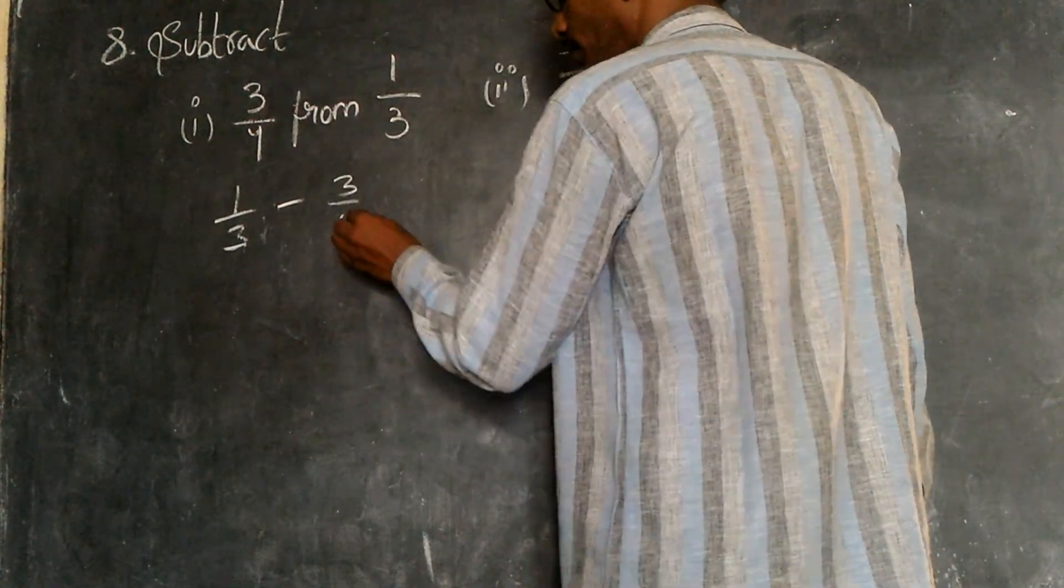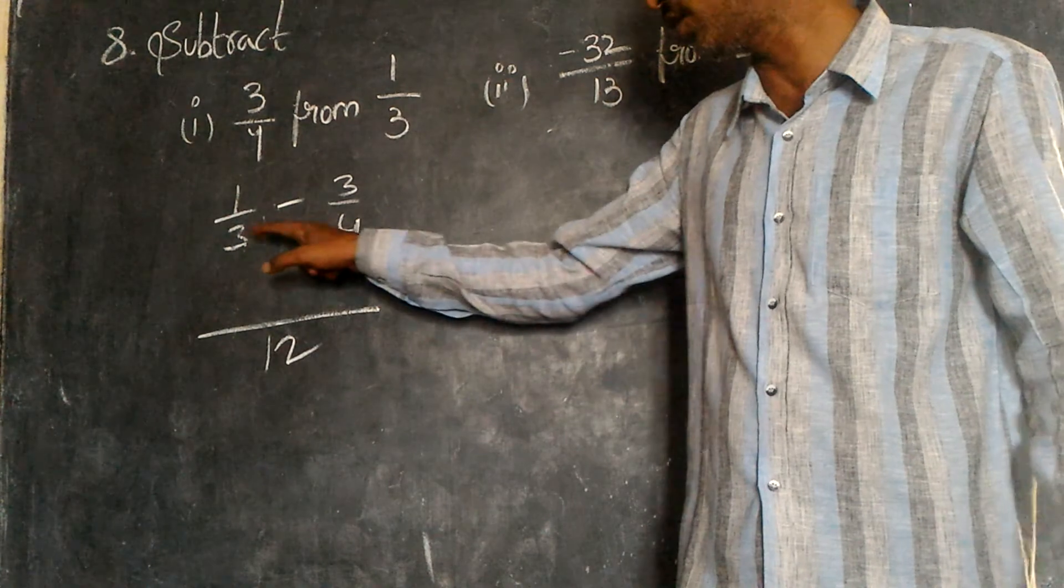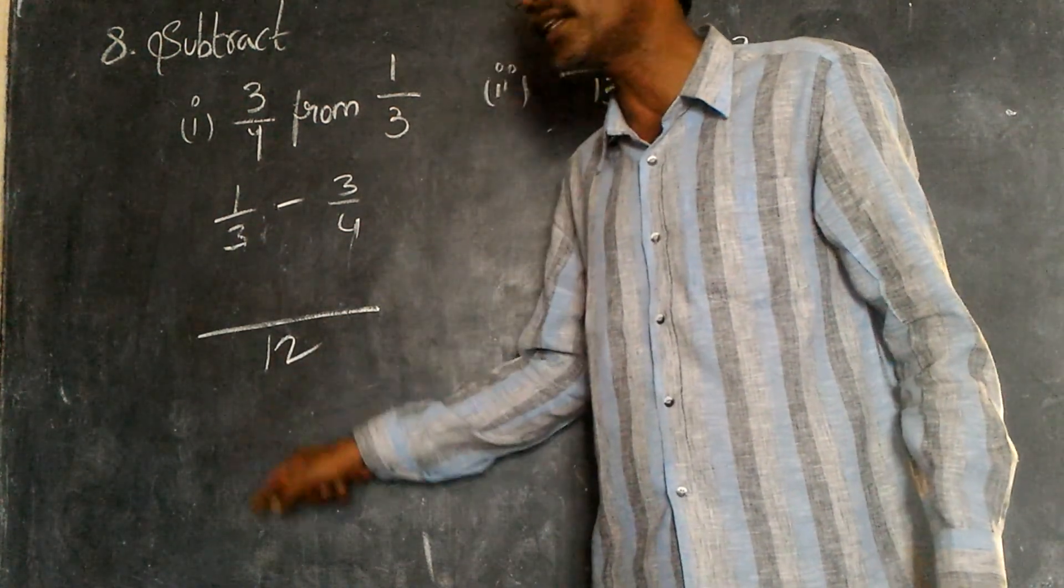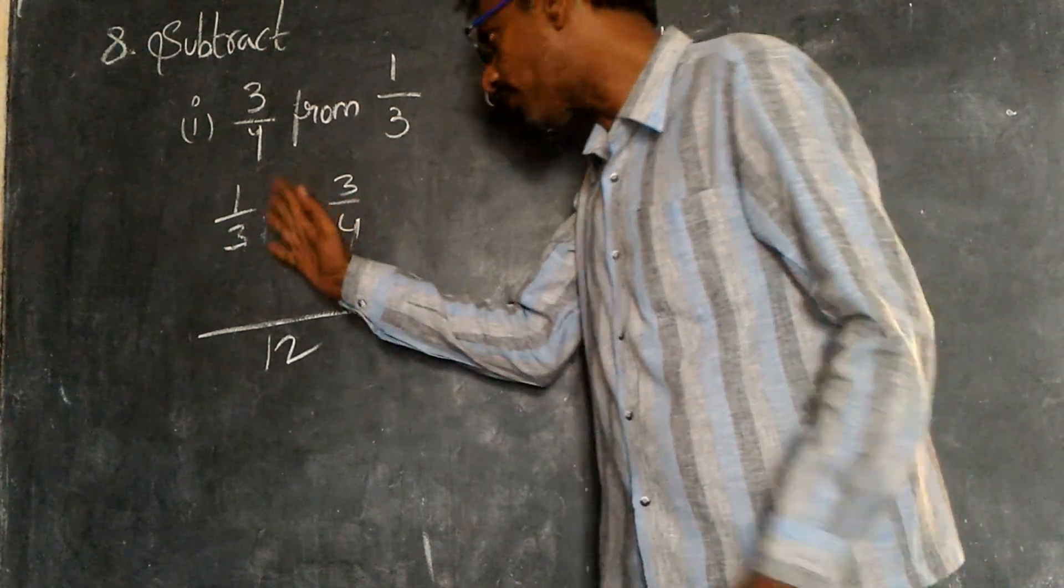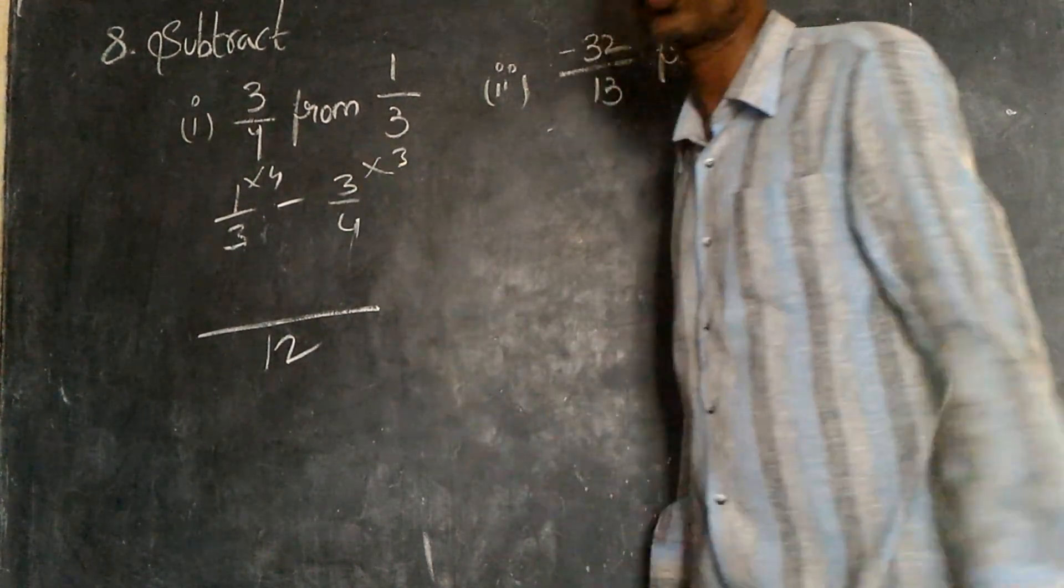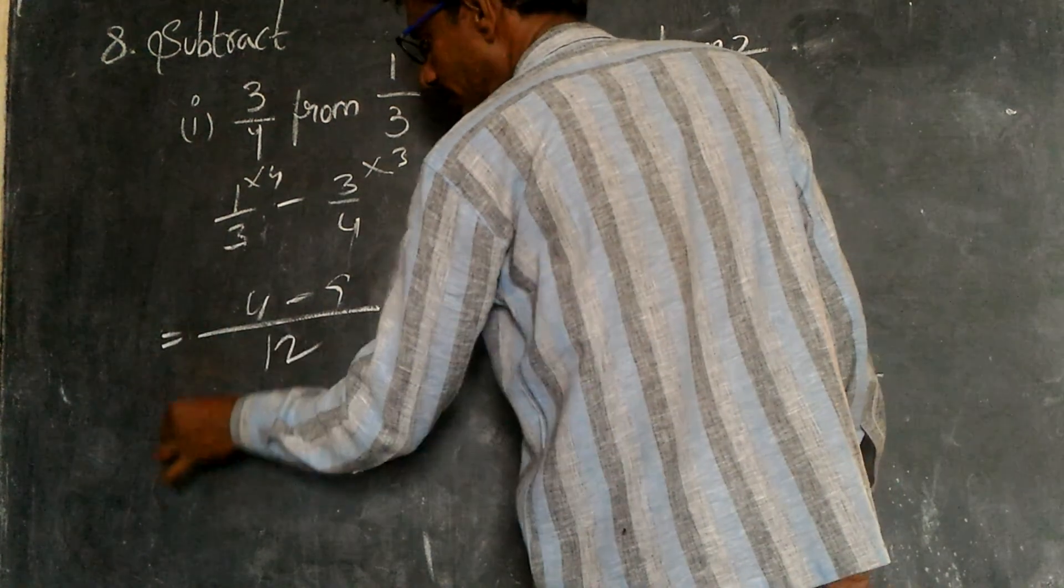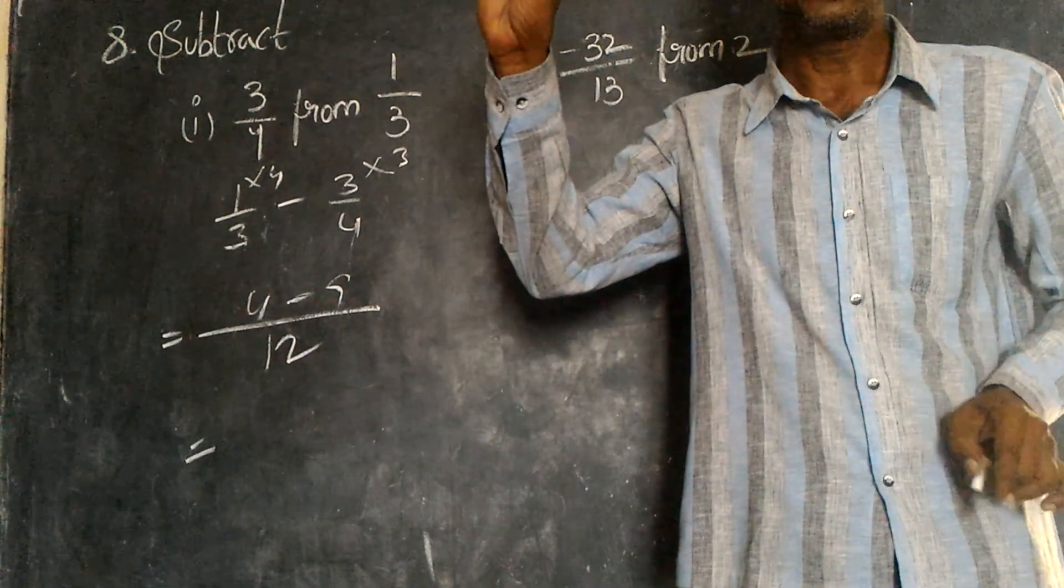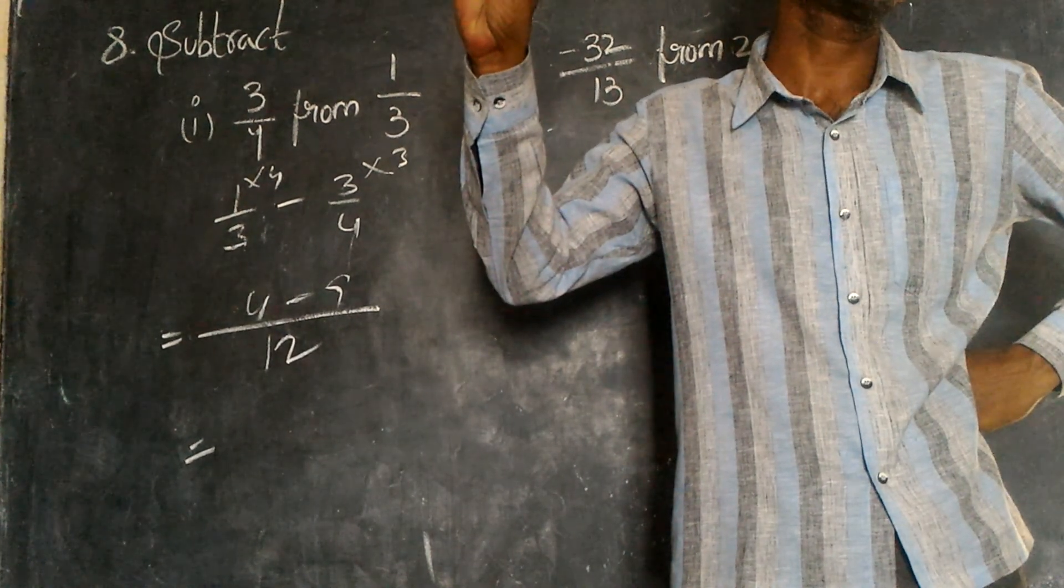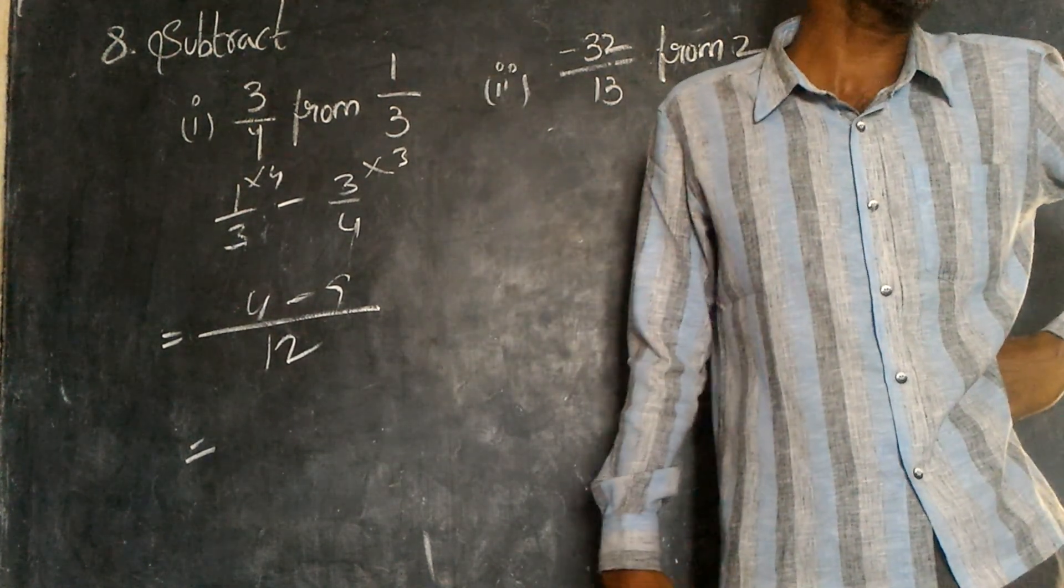Minus 3/4. How many 3s are there in 12? Four. Four minus 3 is 9. Four minus 9.